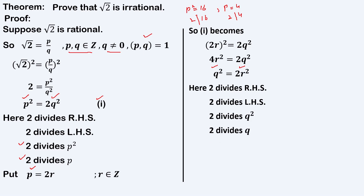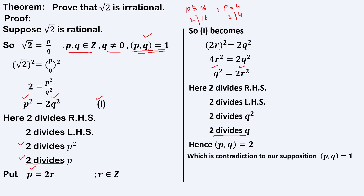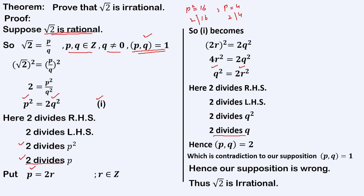That is, 2 divides the RHS, so 2 divides the LHS — that is, 2 divides q squared, and therefore 2 divides q. Now notice that 2 divides p and also 2 divides q. Therefore the greatest common divisor of p and q has now become 2. But what we supposed is that the greatest common divisor of p and q is 1 — this is a contradiction to our supposition. Because we supposed that square root of 2 is rational, so the GCD of p and q must be 1. Our supposition is wrong; we supposed that square root of 2 is rational. Hence square root of 2 is irrational, because if a number is rational then it cannot be irrational and vice versa.